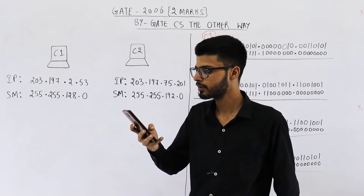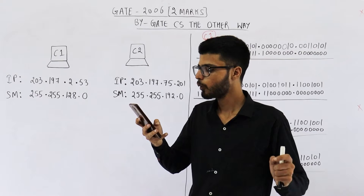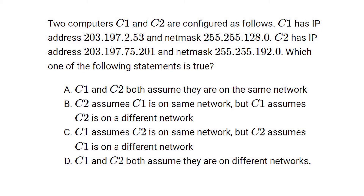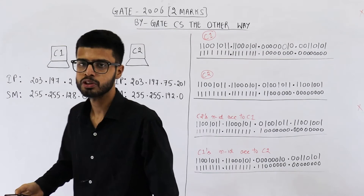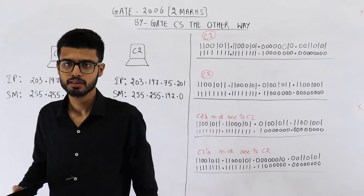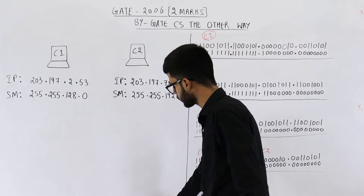Have a look at these statements. Option A says C1 and C2 both assume they are on the same network. Option B says C2 assumes C1 is on the same network but C1 assumes C2 is on a different network. You can have a look at option C and option D by pausing the video.